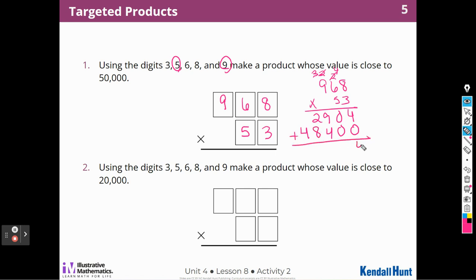5 times 9 is 45 plus the 3 is 48. I think I might be a little bit over, but I think I'm really close. 8 plus 2 is 10, plus 1 is 11, and 4 plus 1 is 5. That is really close to 50,000, isn't it? Now, did I have to get exactly 50,000? No, it said close to. So I'm going to be really happy with that.